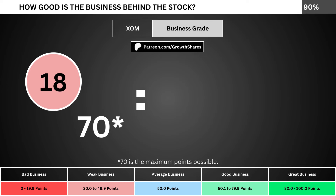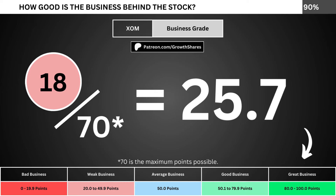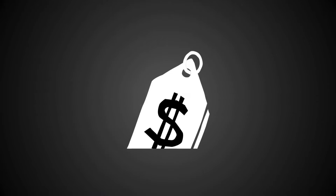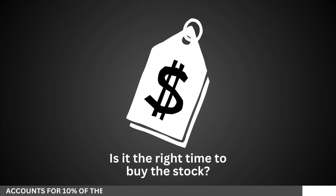Adding everything together, we divide the points awarded by the maximum points possible, which is 70. That gives us the business grade for the company. We want the business grade to be above 50, meaning it has a better-than-average business. But, of course, we can't forget about the fair price and whether it's the right time to buy the stock.